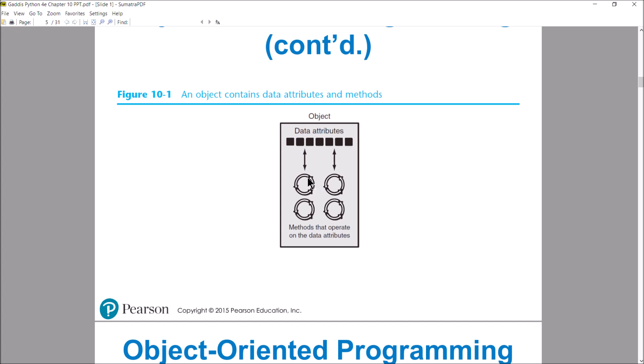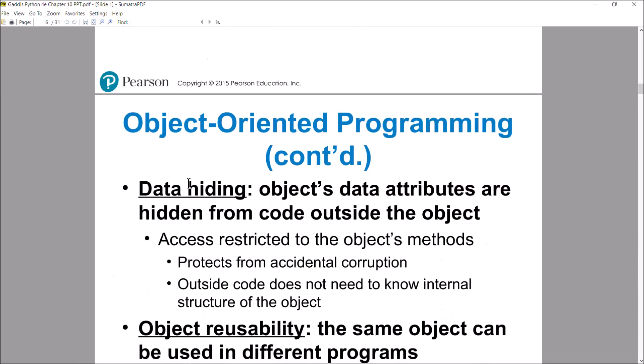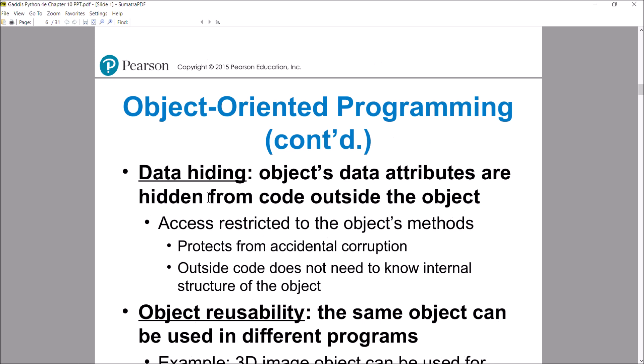One main benefit is the fact that since we're writing the functions that operate on the data, outside code — code that is outside the object and trying to manipulate it — must manipulate the object by calling these functions. How we write those functions is going to determine how that data gets manipulated, so we can have some input validation and control the data through these functions that are part of the object. Data hiding — that's another term — is when those data attributes, those variables, are hidden from code outside the object.